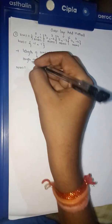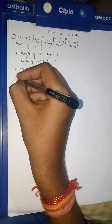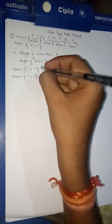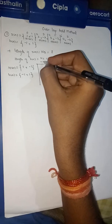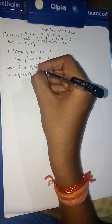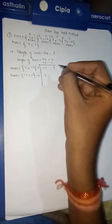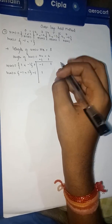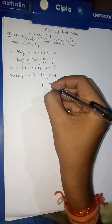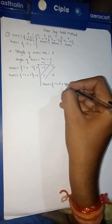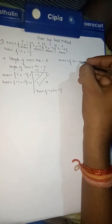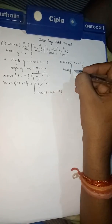For x1[n] = {1, -1} and h[n] = {-1, 1}, we use the matrix method to find y1[n]. The matrix computation gives us -1, 1, 1, -1, resulting in y1[n] = {-1, 2, -1}.